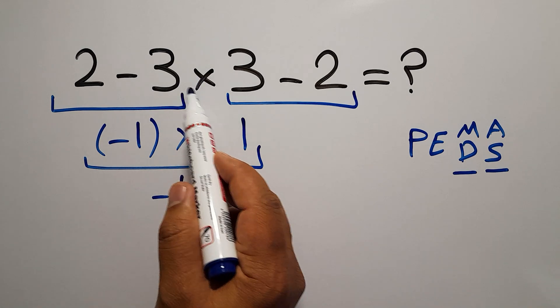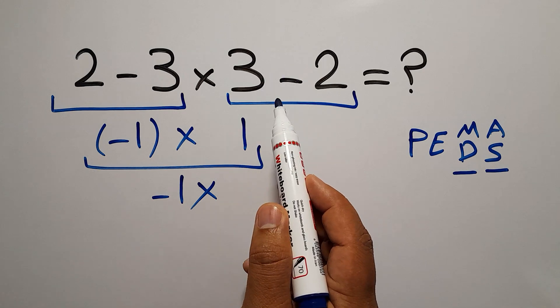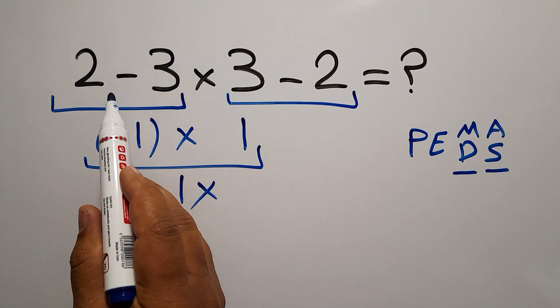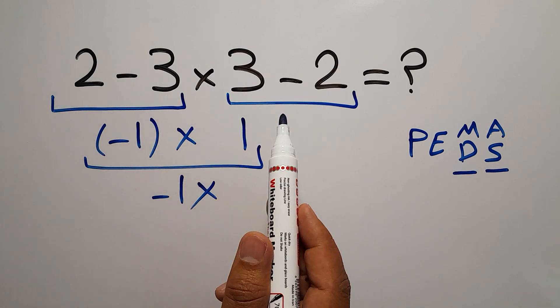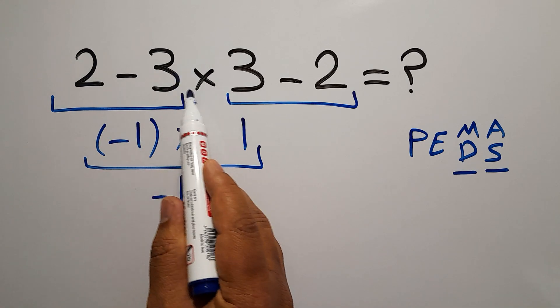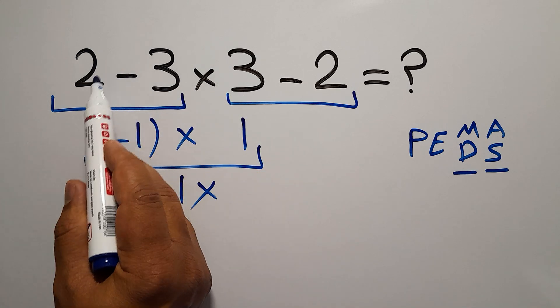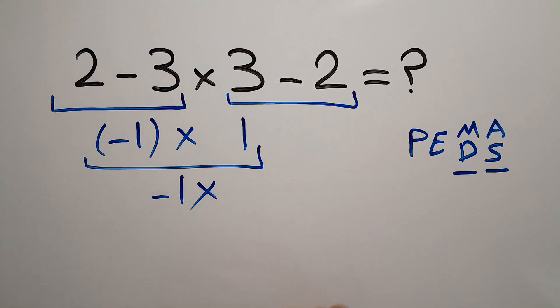And after this multiplication, we have two subtractions. And as we know, when we have more than one subtraction in one expression, we have to work from left to right. So, after this multiplication, we have to do this subtraction. And finally, we have to do this subtraction.